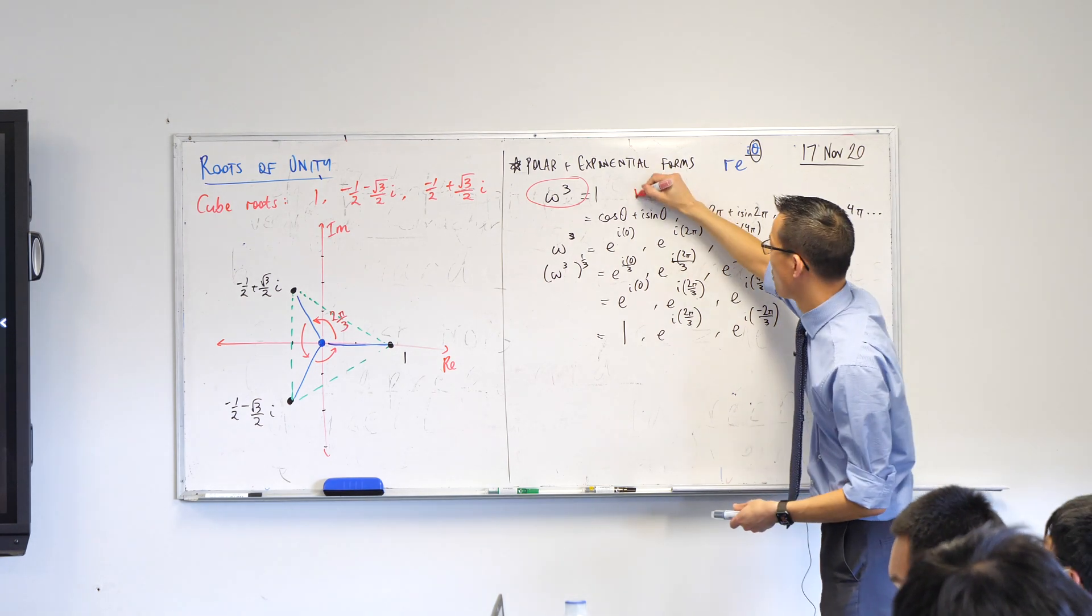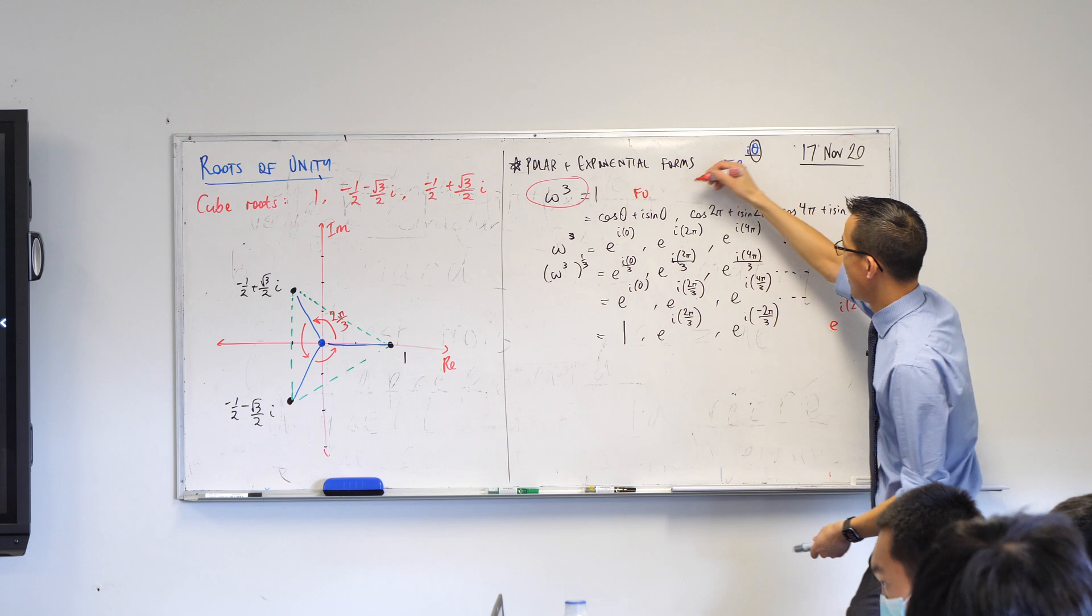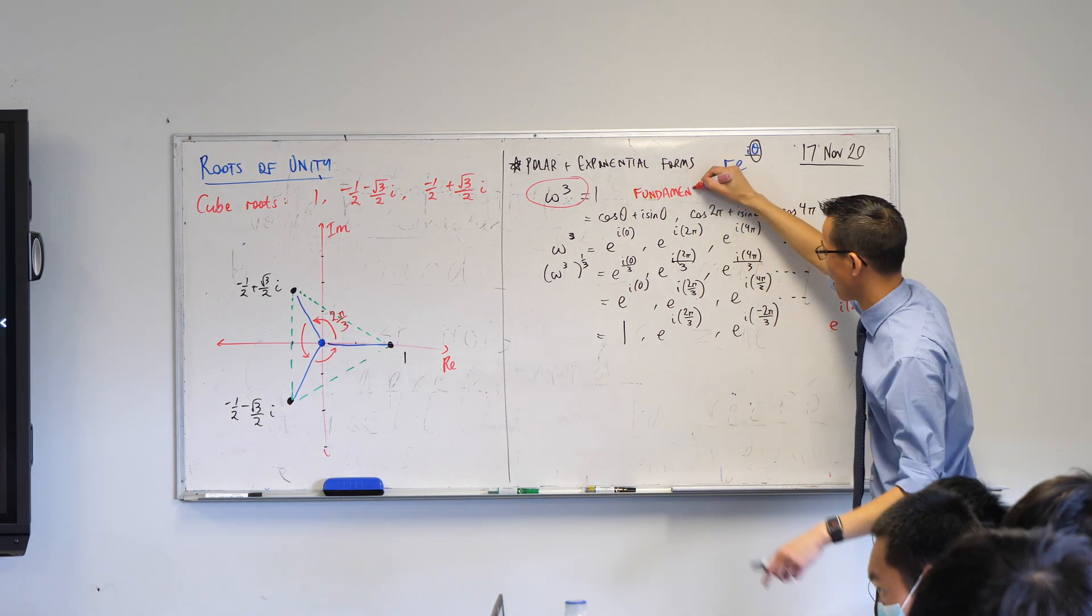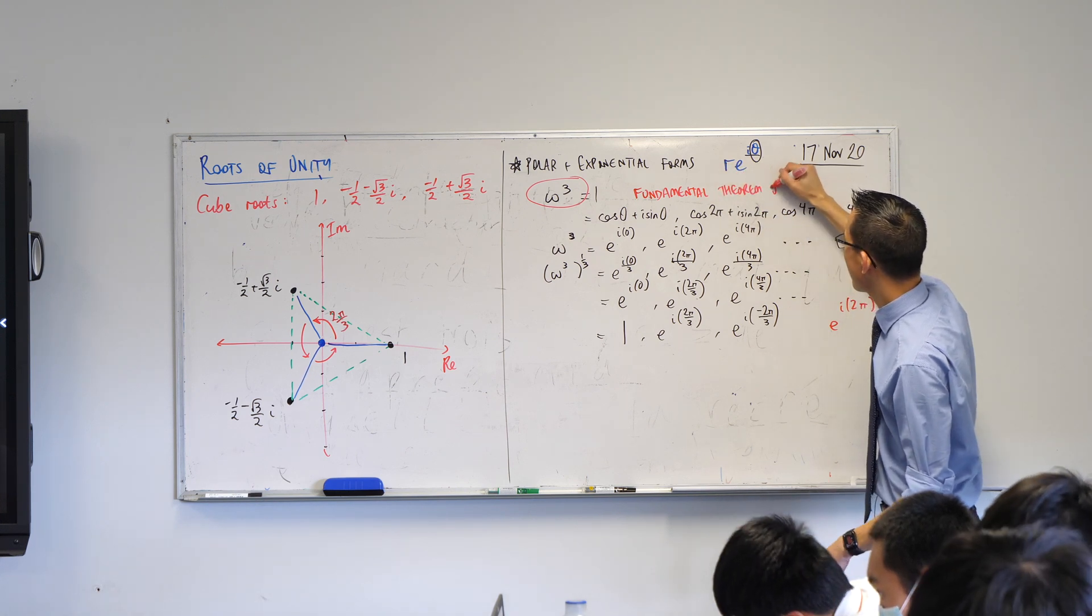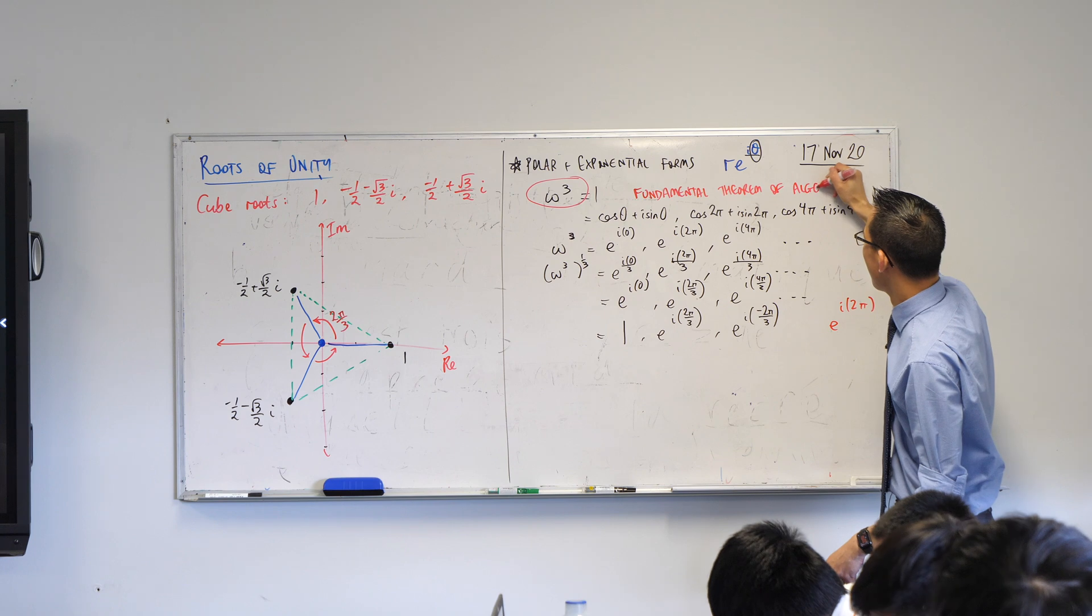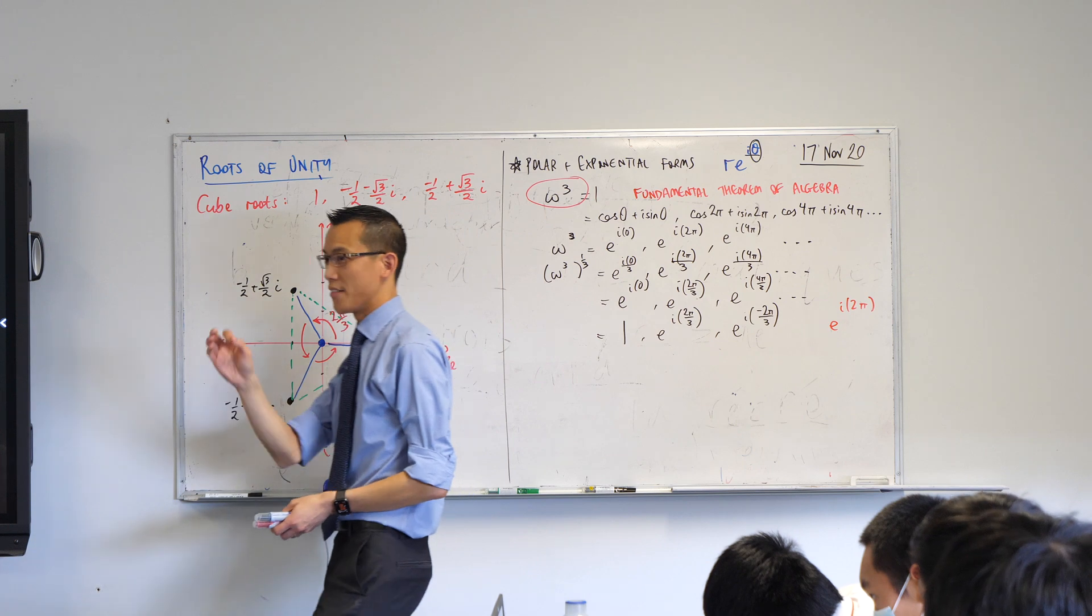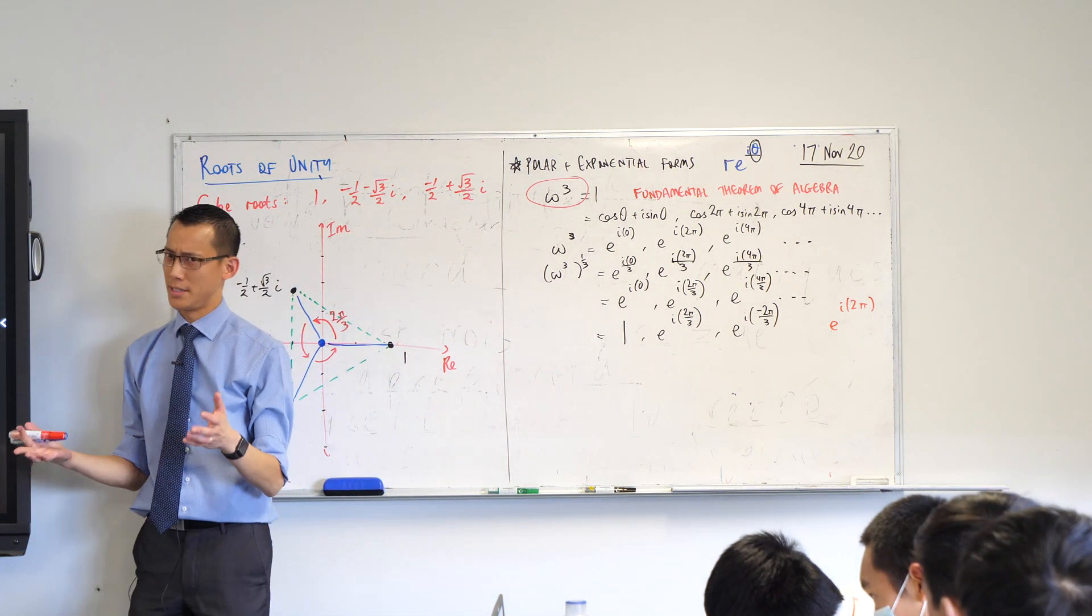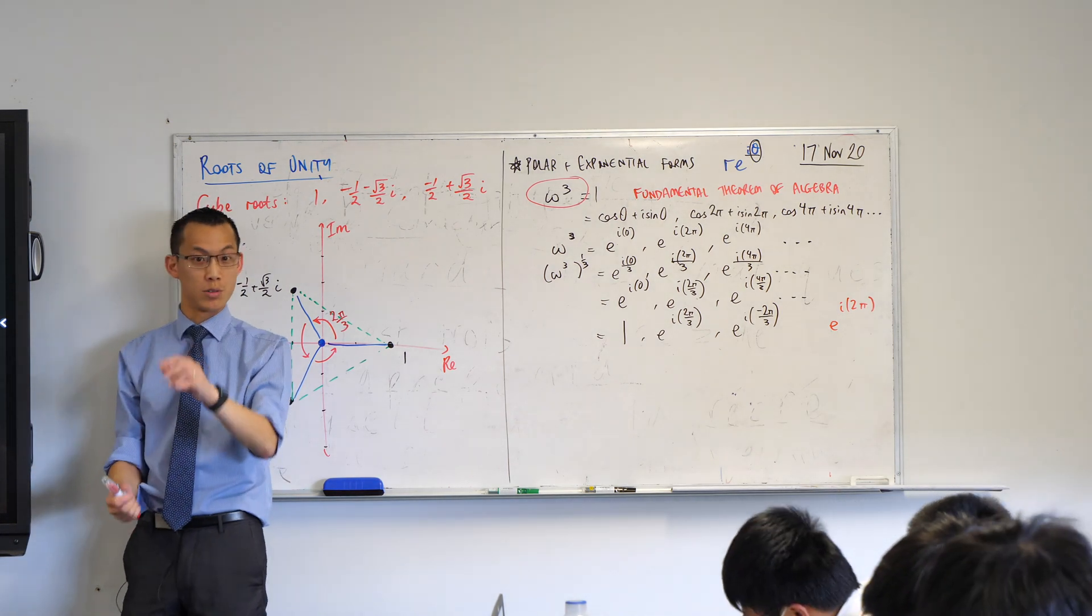This is really important, this idea, it's so important it gets a name. You should write this down. This is called the fundamental theorem. You know they're not messing around when they call something a fundamental theorem. The fundamental theorem of algebra. More formally stated, it's that an nth degree polynomial will have exactly n solutions, if you count with multiplicity, because sometimes two solutions can sit on the same spot, but we still count them as two solutions.